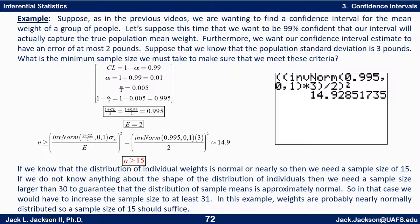Next we use the inverse normal function on our calculators with the standard normal distribution to find this z-score. We multiply this by the given population standard deviation three divided by the given margin of error two, then square the whole thing to get approximately 14.9. This entire calculation is given in one line as you see on the TI-84 screenshot. Recall that we always round the value of n up to the next highest whole number — not round off, but round up. So the minimum needed sample size is 15.